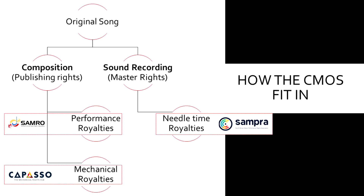Now that we have two halves established, there are entities in each half. On the composition side of a song, the entity in there is a publisher — a music publisher. And on the sound recording side of things, the entity on that side is a record label. So what is a music publisher? A music publisher in basic terms is an entity that has compositional rights or a stake in the composition.